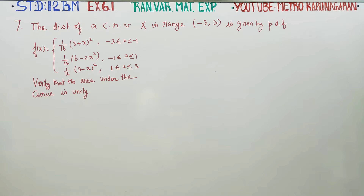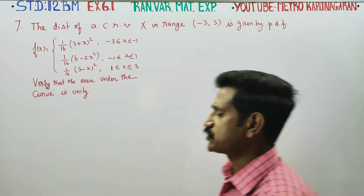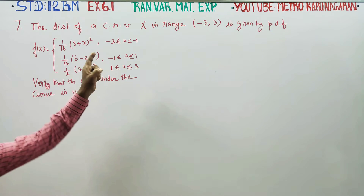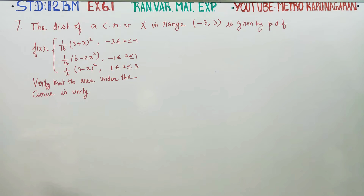Dear students, in exercise number 6.1, problem number 7, the distribution of a continuous random variable in the range minus 3 to 3 is given.